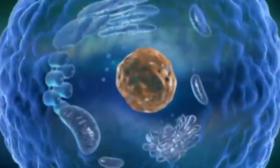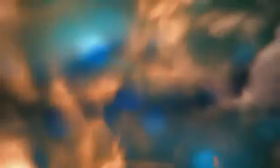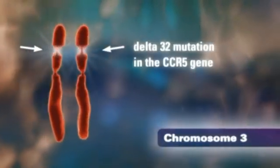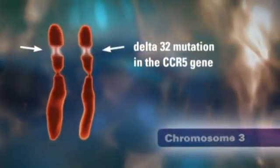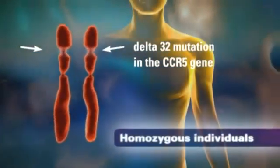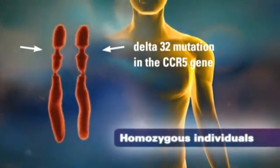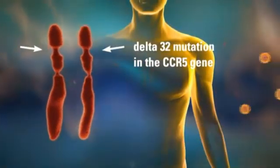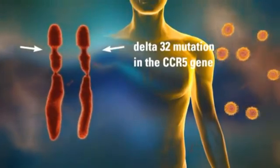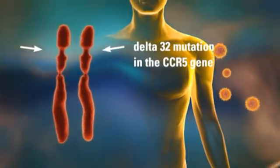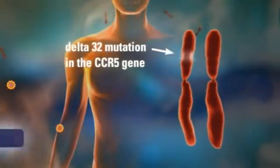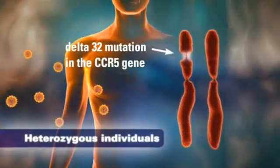The rationale for targeting viral entry as a novel approach to HIV therapy arose from the discovery of a commonly occurring CCR5 mutation known as Delta 32 on chromosome 3. Delta 32 homozygous individuals who have two copies of the Delta 32 mutation and therefore lack functional CCR5 co-receptors are highly resistant to HIV-1 infection.